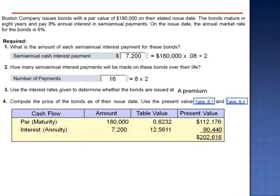The selling price of the bonds is $202,616. This is consistent with our prediction that these bonds would sell at a premium. Whenever the market rate is less than the contract rate, bonds sell at a premium.